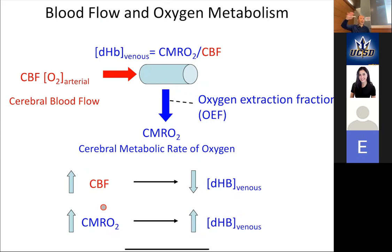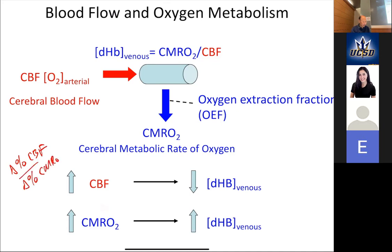The brain is set up such that the percent change in CBF over the percent change in CMRO2 is typically a ratio of two to four. The brain is super conservative. That ratio tends to be higher — maybe three — in your visual and motor cortex, and closer to two in areas like the hippocampus or prefrontal cortex. The stuff you use to decide whether to buy something on Amazon doesn't need to act that quickly, so a two-to-one ratio is probably fine.